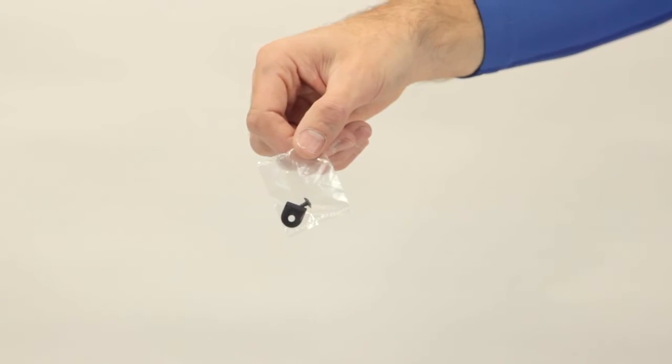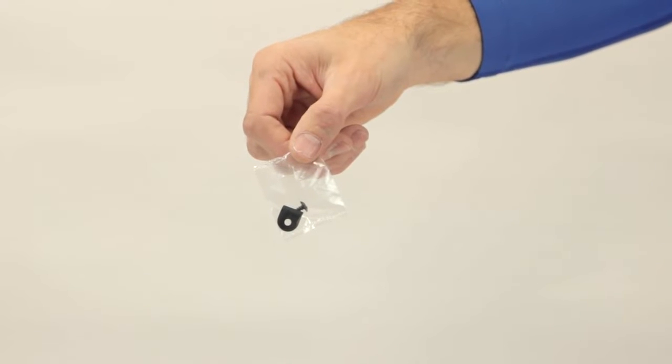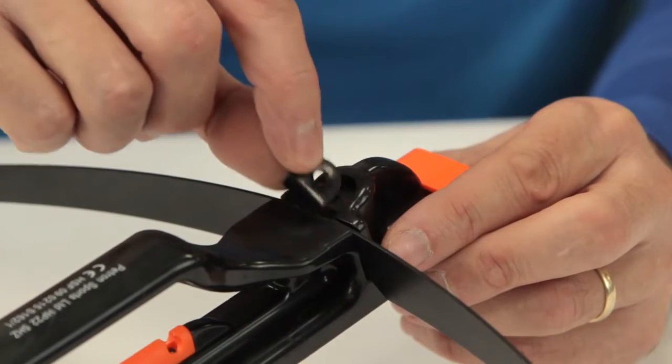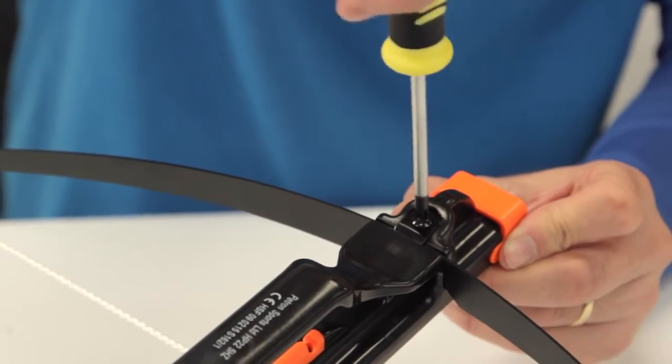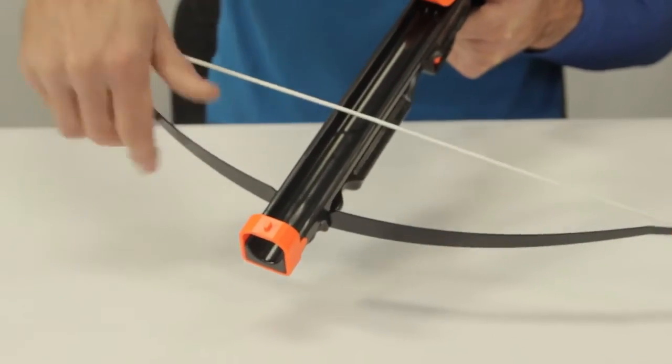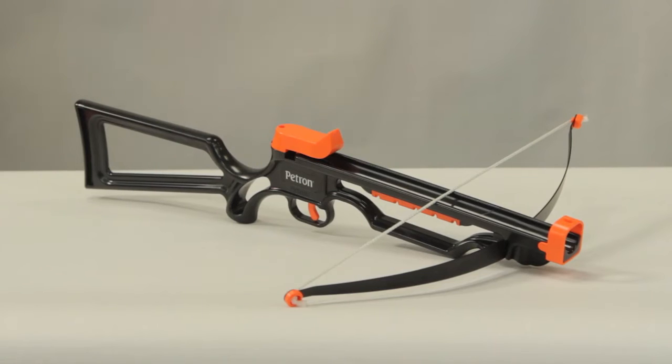Next, you will need to take the clamp plate and screw out of the polybag which includes the darts. Place the clamp plate over the prod, then insert the screw into the hole and tighten with the Phillips screwdriver. The prod should now be secure. That's assembly complete.